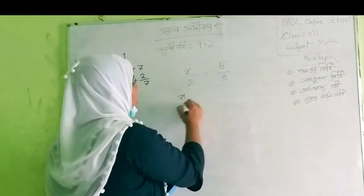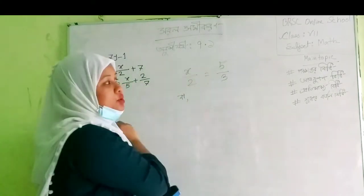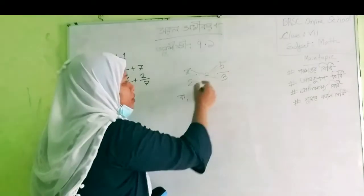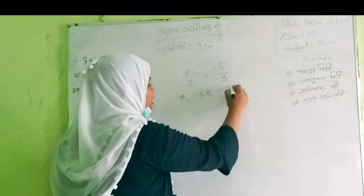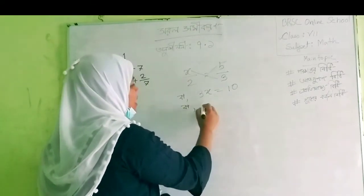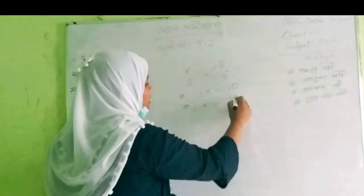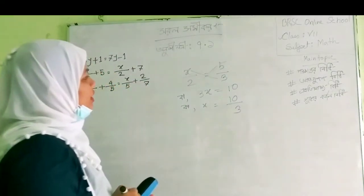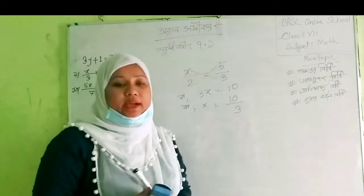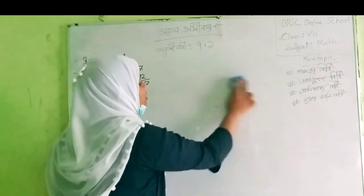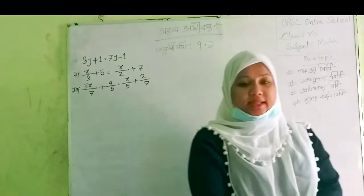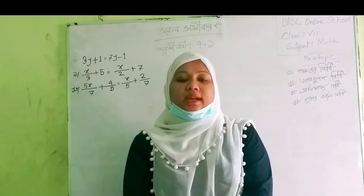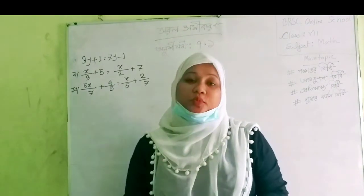x by 2 is equal to 5 by 3. So R is equal to R. We have to write 3x is equal to 10, 2x by 3. R is equal to R. The third one is equal to R. 1 and 0 by 3. By the right way, the second one is equal to R.